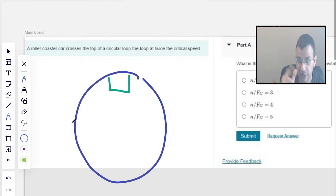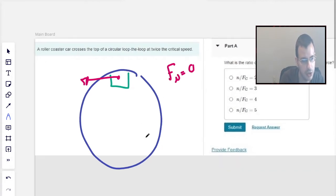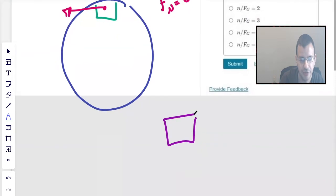The idea of the critical speed here is we want the car to move exactly to the left, and the normal force is going to equal zero. If we draw a picture of this car, we're going to have just the force due to gravity pulling it out. Usually there's a normal force also pushing down on it, but if it's just barely touching the track, normal force is zero.